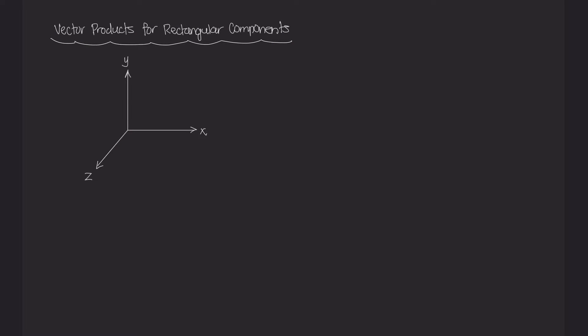In the last few videos we've been talking about vector products or cross products — how to calculate their direction and magnitude — and we also talked about the right-hand rule to give us a quick indication of the direction of the resultant vector when you take the cross product.